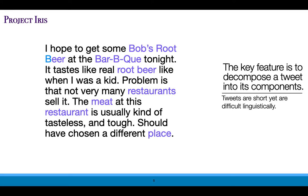Let's take a tweet and use it as a sample of how this AI-based sentiment analysis might work. Tweets may be short, but that doesn't mean they're simple linguistically. One of the first steps is to look for the entities — the nouns. Entity recognition would find that Bob's root beer is an entity, barbecue is one, root beer is one, restaurants is an entity, and meat, restaurant, and place are all entities. That's the starting point that most of these algorithms use to begin their sentiment analysis.